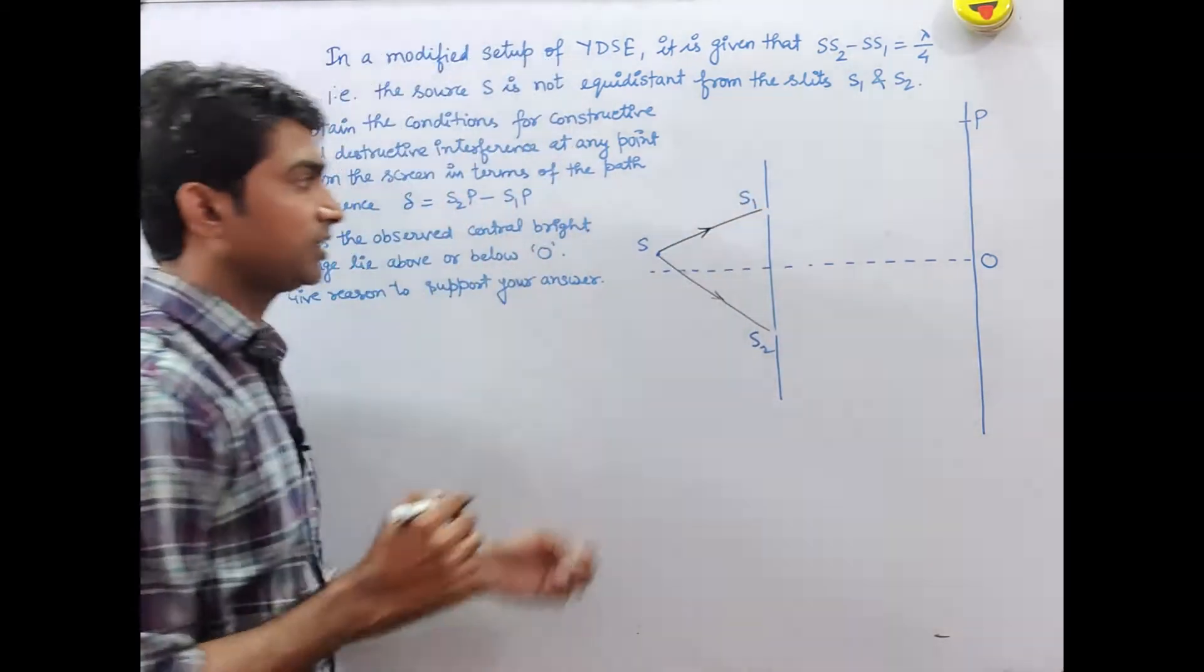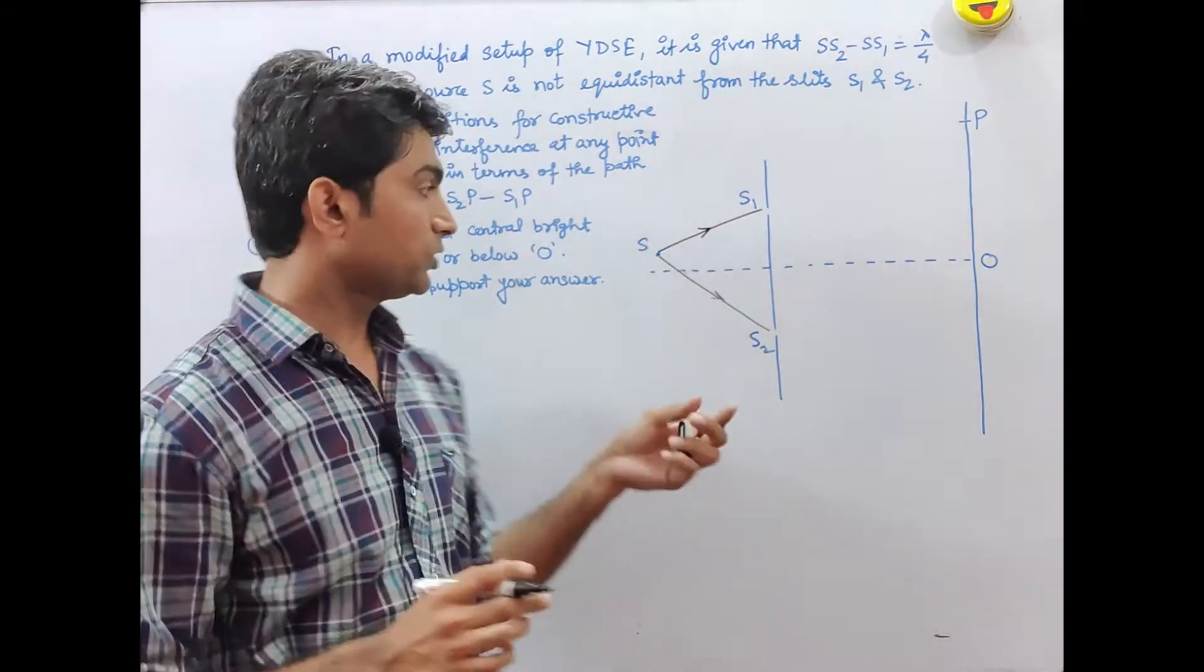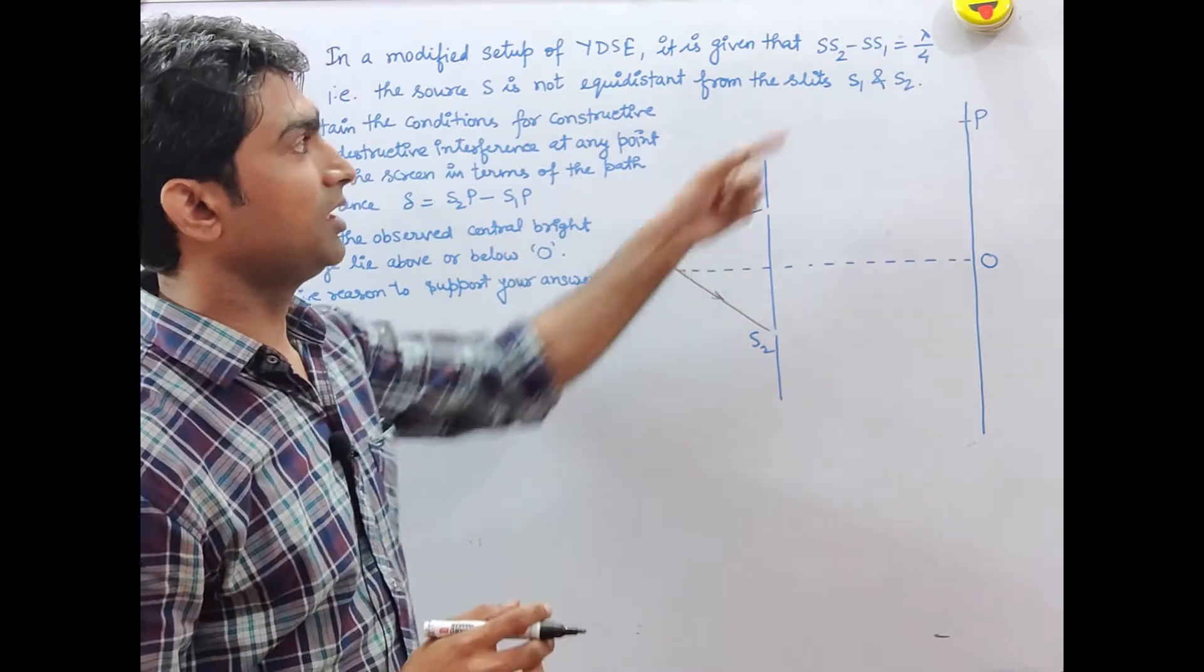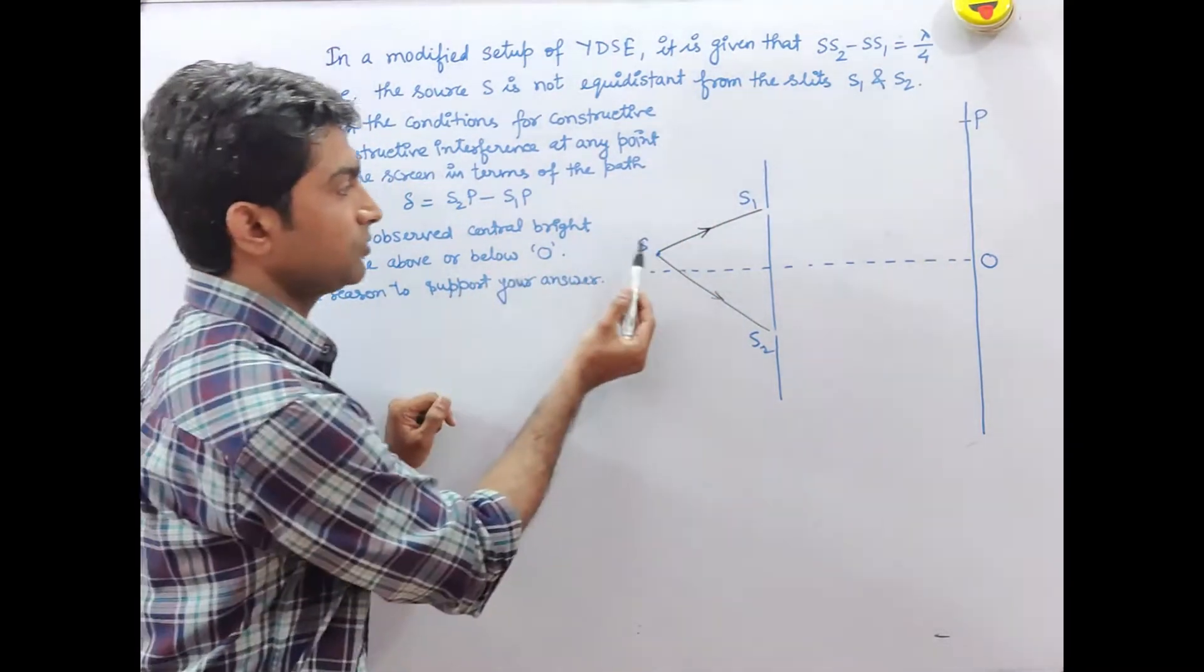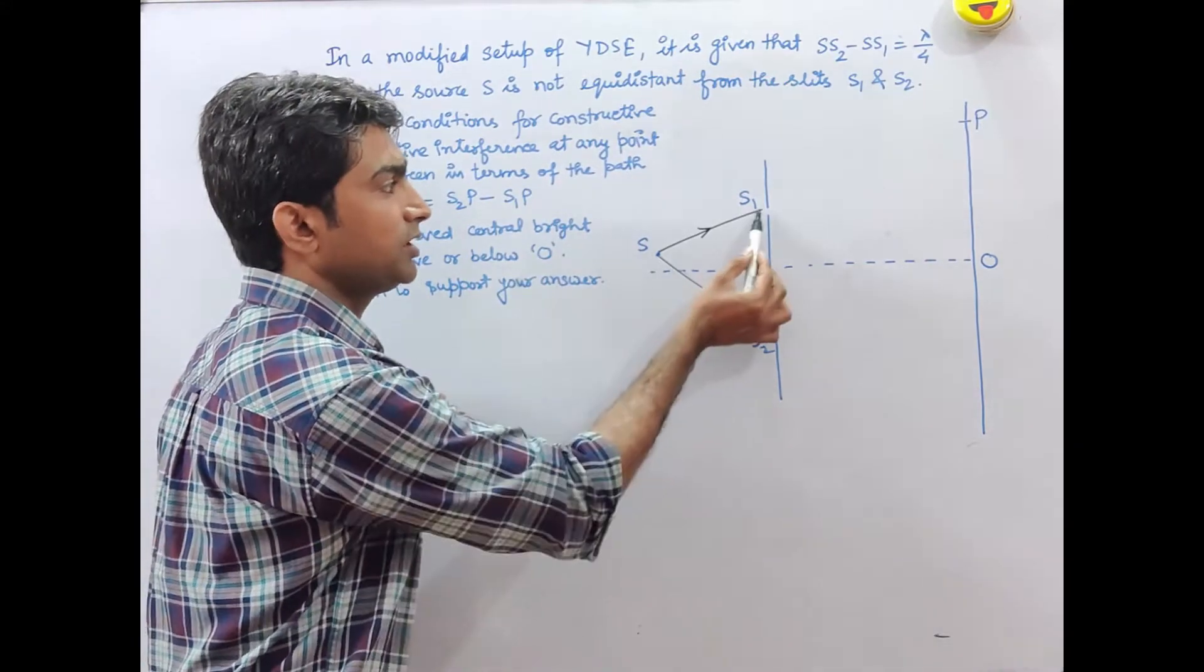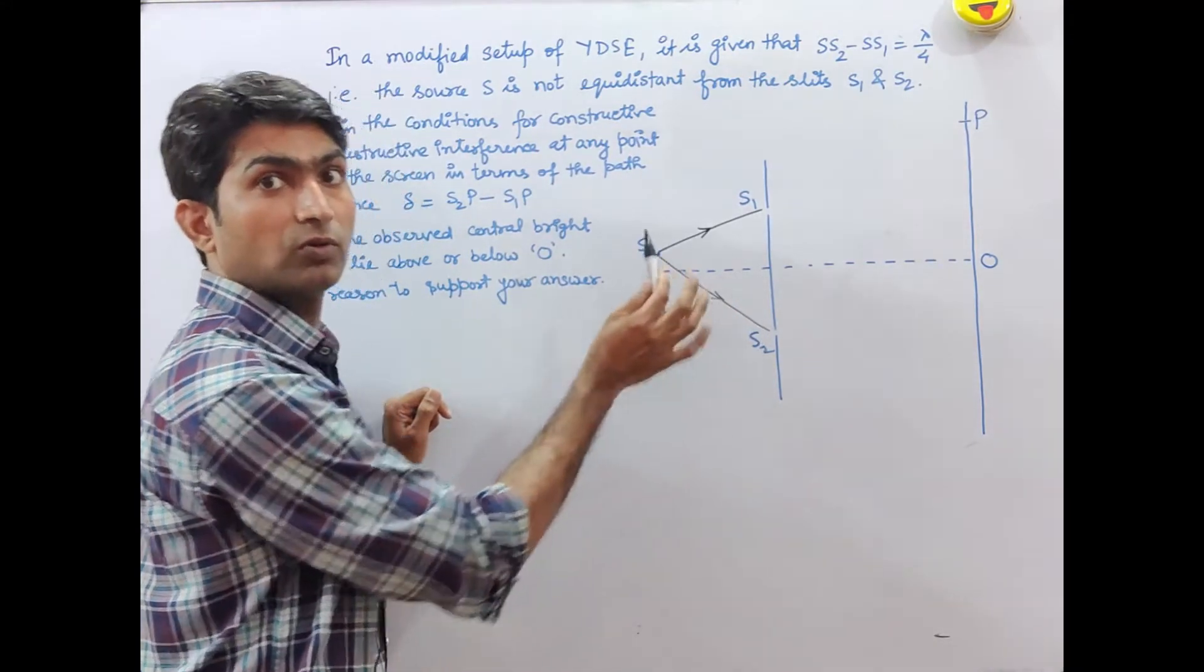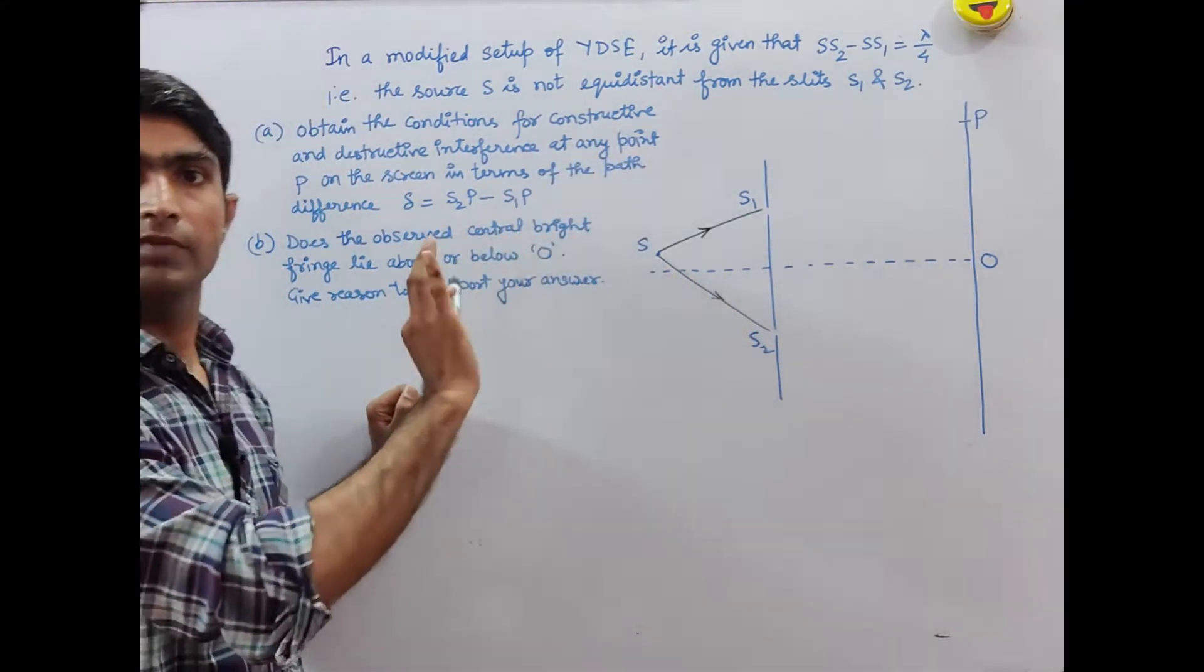Here the extra path difference is λ/4. In YDSE, the source is normally on the central line at equal distance, so both paths are the same. But here the path is not the same.